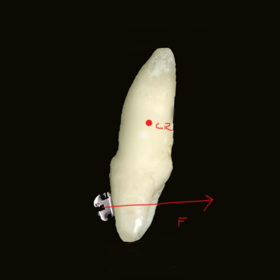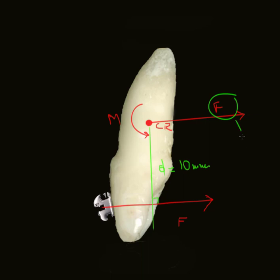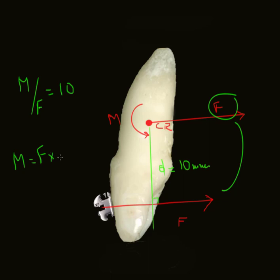If you put a force F at the bracket away from the center of resistance, there is a distance — in this case 10 millimeters. If you calculate the force system at the center of resistance, you will get the same force F that was at the bracket. Because the force is away from the center of resistance, you will also get a moment. The moment-to-force ratio in this case is M over F equals 10, because the moment equals F times D, which means M over F equals 10.